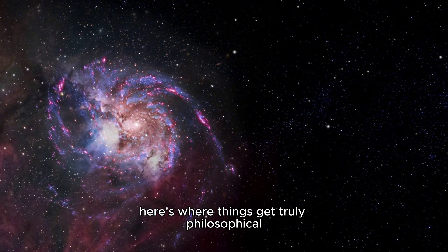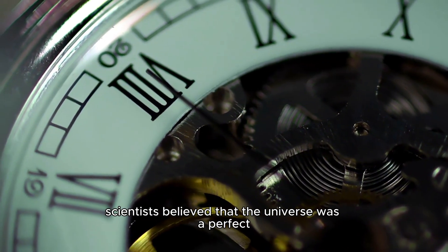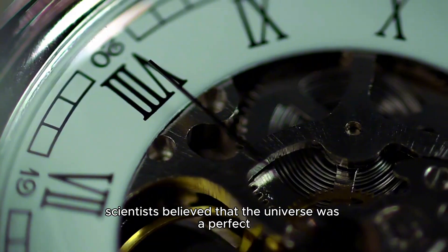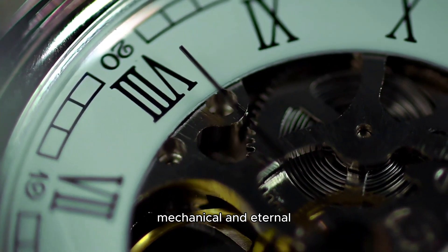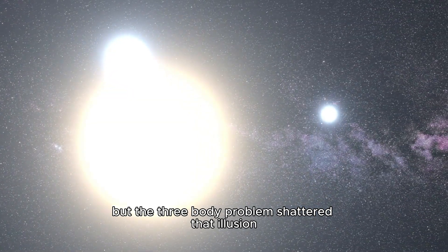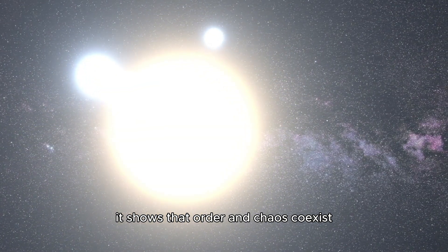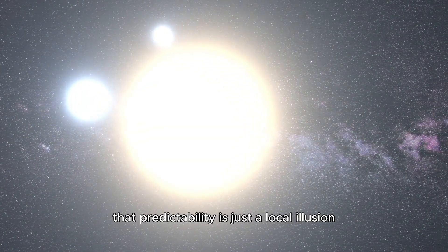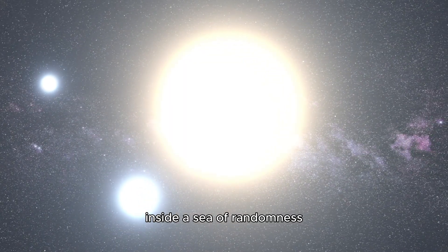Here's where things get truly philosophical. For centuries, scientists believed that the universe was a perfect clockwork. Predictable, mechanical, and eternal. But the three-body problem shattered that illusion. It shows that order and chaos coexist. That predictability is just a local illusion inside a sea of randomness.